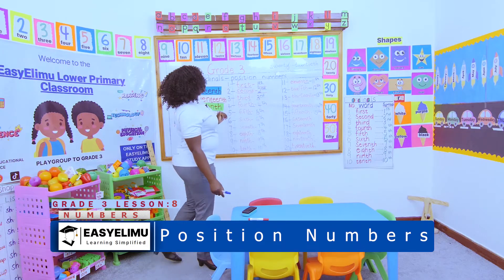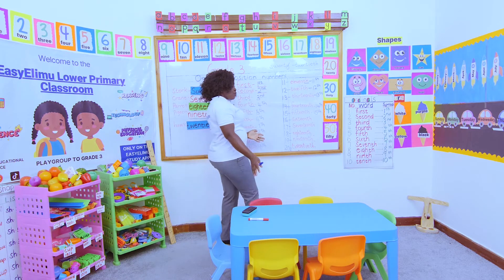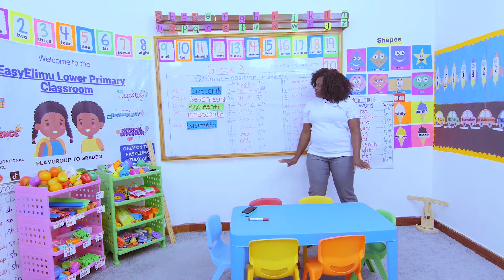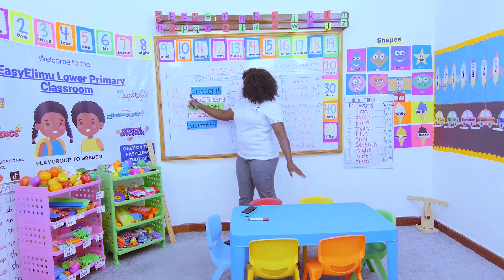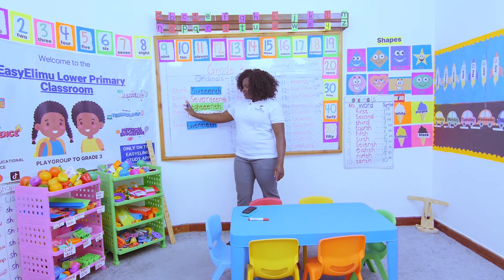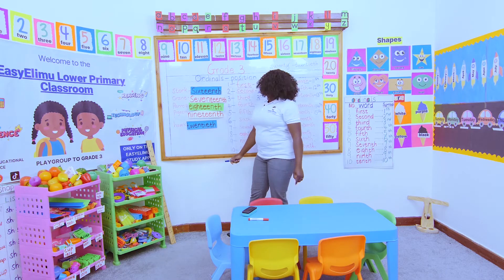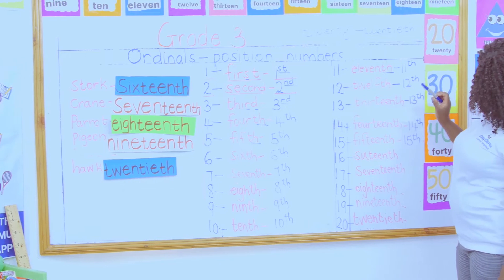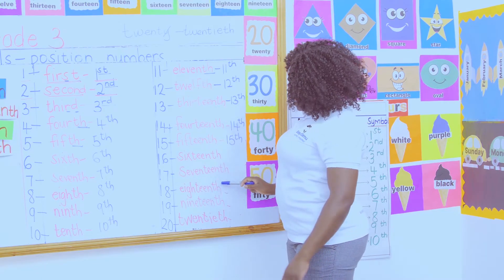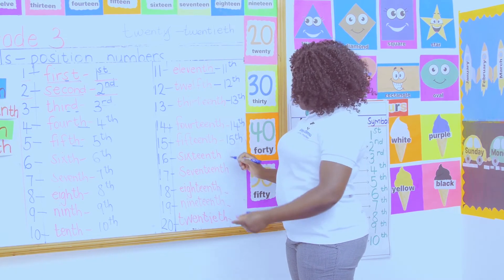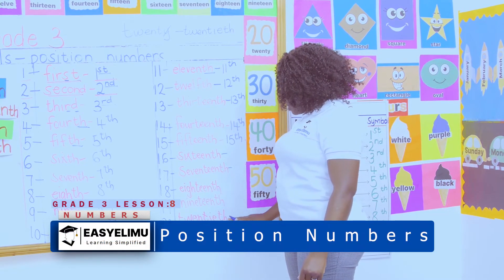Yesterday we talked about these birds. When I was coming to school in the morning, on an electric wire, I saw five birds resting on the wires. The first bird from the left was the stork. Then we had the crane, then the parrot, then the pigeon, and then the hawk. I showed you how to write their names using the ordinal name. And today we want to write the ordinal symbol.